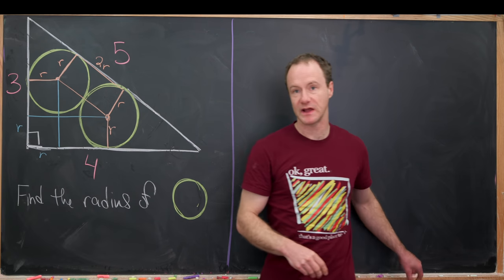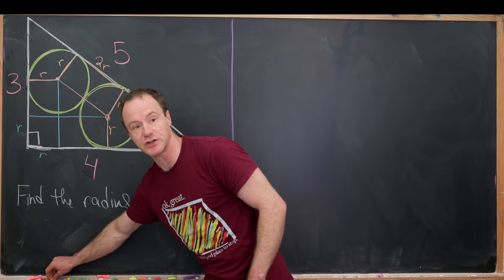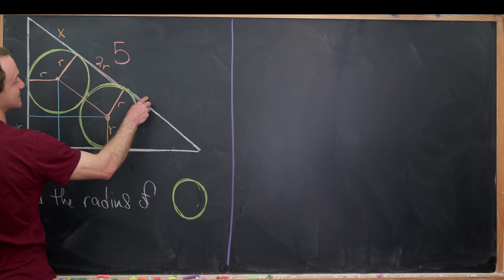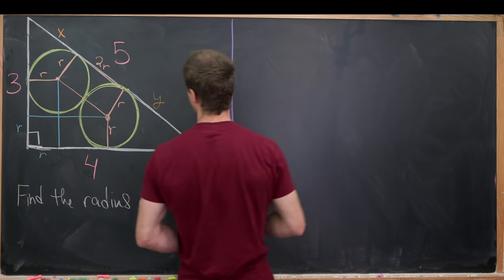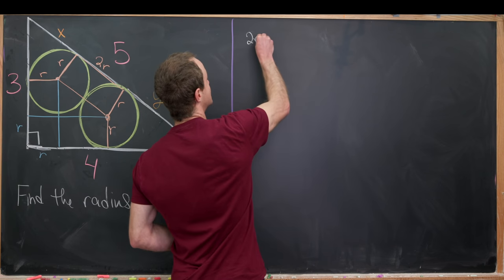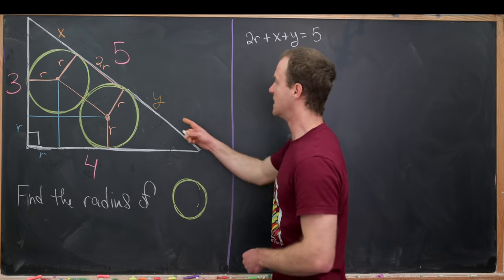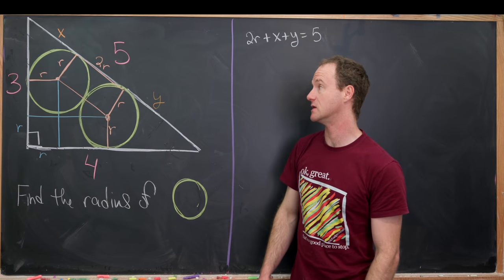So next up, what we'd like to do is introduce maybe some more variables into this situation. So let's call this length right here x, and this length right here y. And that gives us our first equation. Notice we know that 2r plus x plus y is equal to 5, given that that's just two ways of measuring this hypotenuse here.